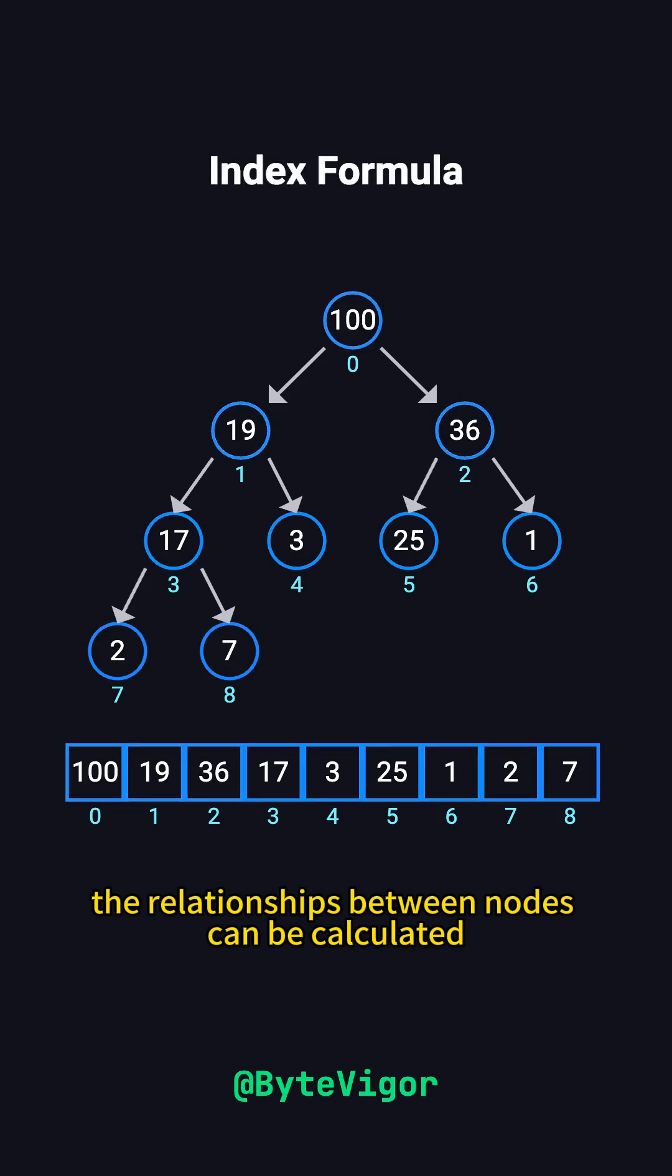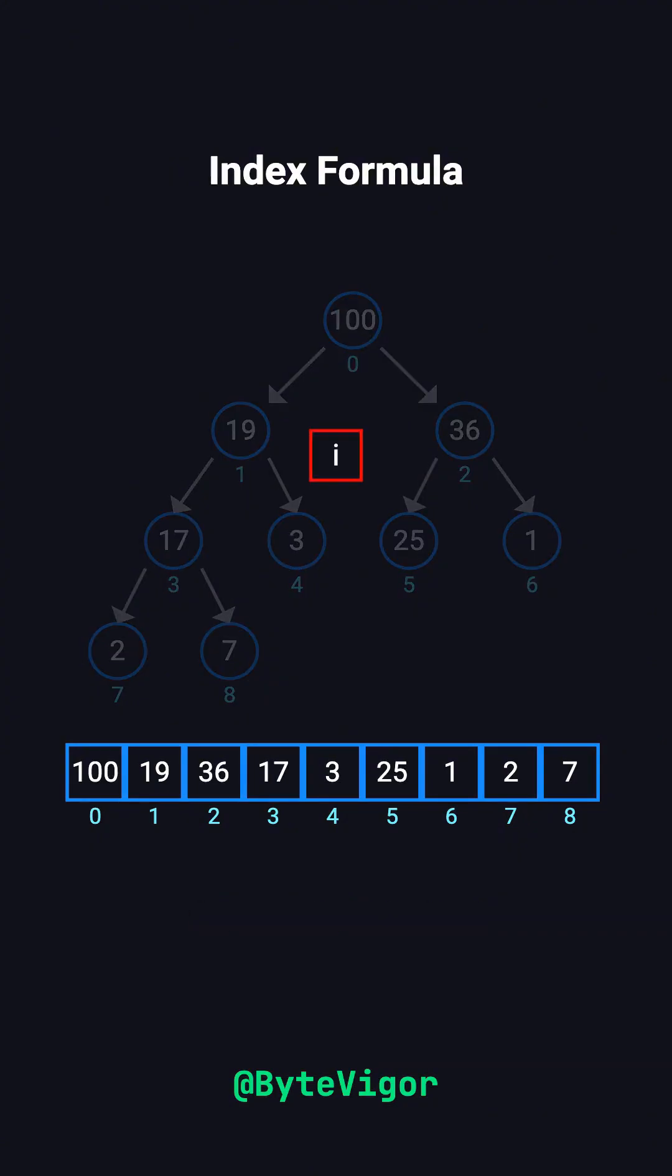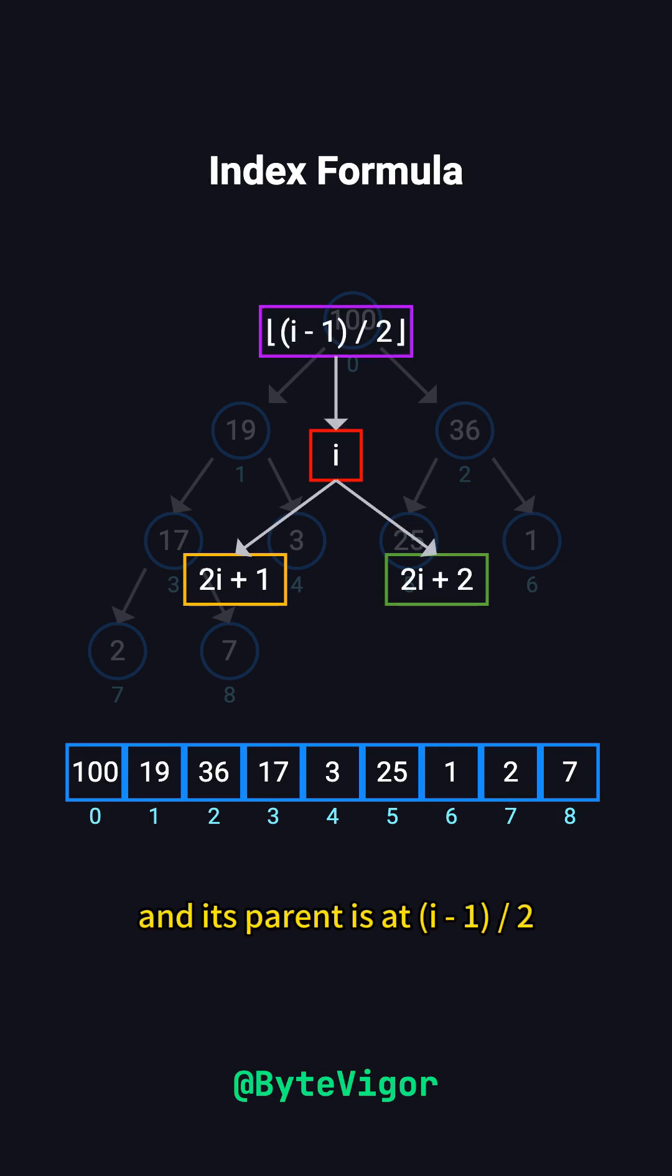The relationships between nodes can be calculated using simple formulas. For a node at index i, its left child is at 2 times i plus 1. Its right child is at 2 times i plus 2. And its parent is at i minus 1 divided by 2, rounded down.